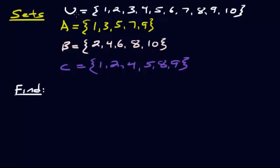So right now I have a universal set which are the numbers 1 through 10, and then I've got sets A, B, and C. A would be all the odd numbers, B would be the even numbers, and C is just a couple random numbers: 1, 2, 4, 5, 8, 9.